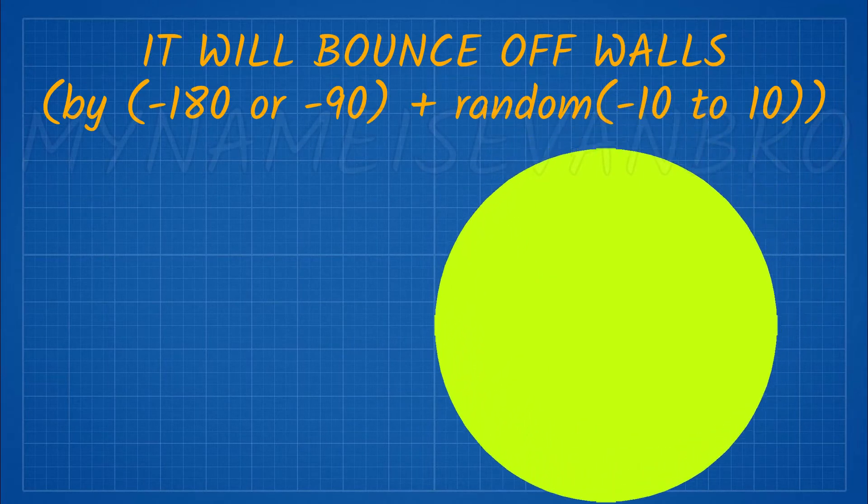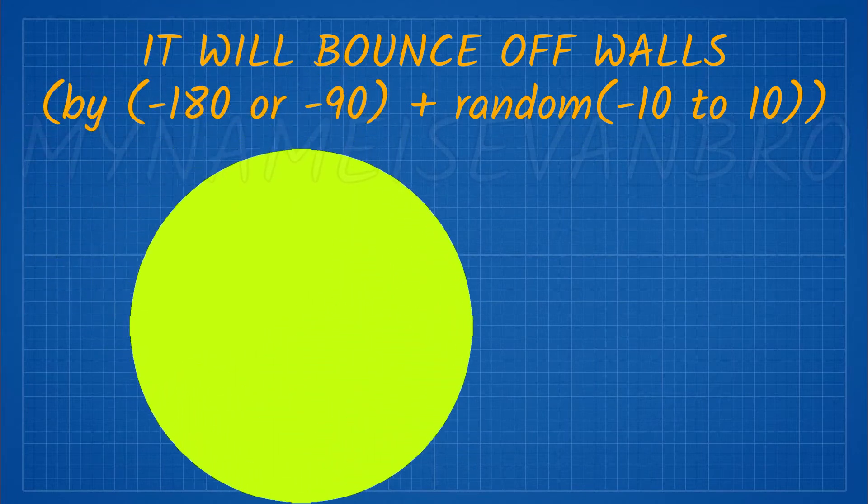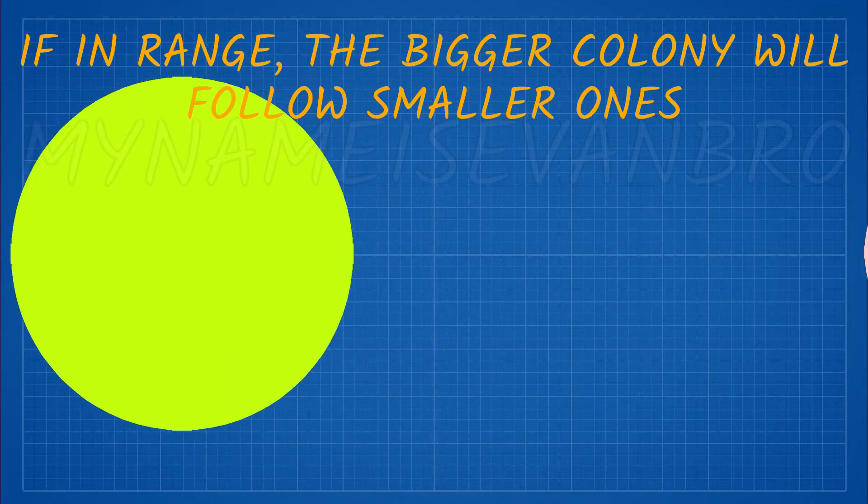When a colony hits a wall, it will bounce off either 90 or 180 degrees plus a random number from negative 10 to 10.